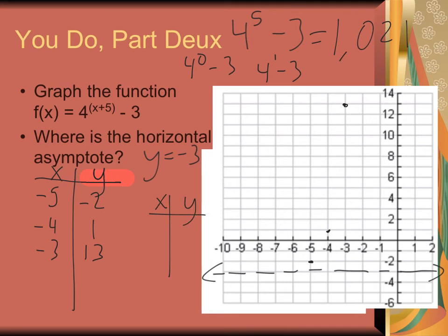So I plug in negative 6. I get 4 to the negative 1st. I'm running out of space here. I'm sorry. So 4 to the negative 1st minus 3. Well, what's 4 to the negative 1st? Well, 4 to the 1st is 4. So 1 over 4 minus 3. So that would be negative 2 and 3 quarters. So negative 2.75, we'll say. So negative 6 and then negative 2.75. And I think what you're going to start to see is we're going to get nice and close to our horizontal asymptote.